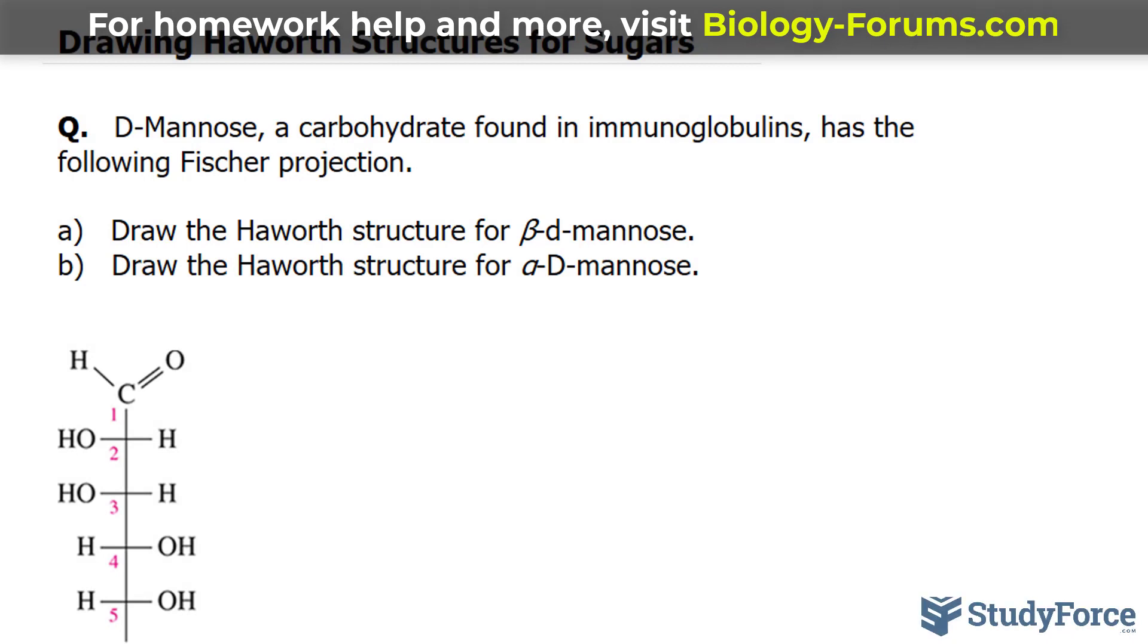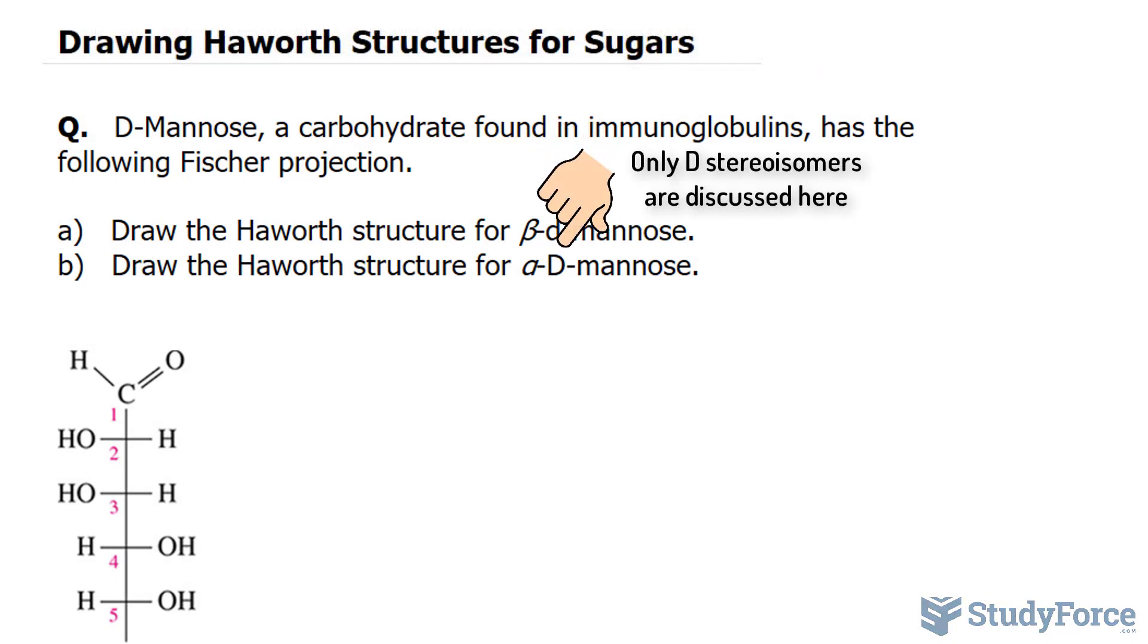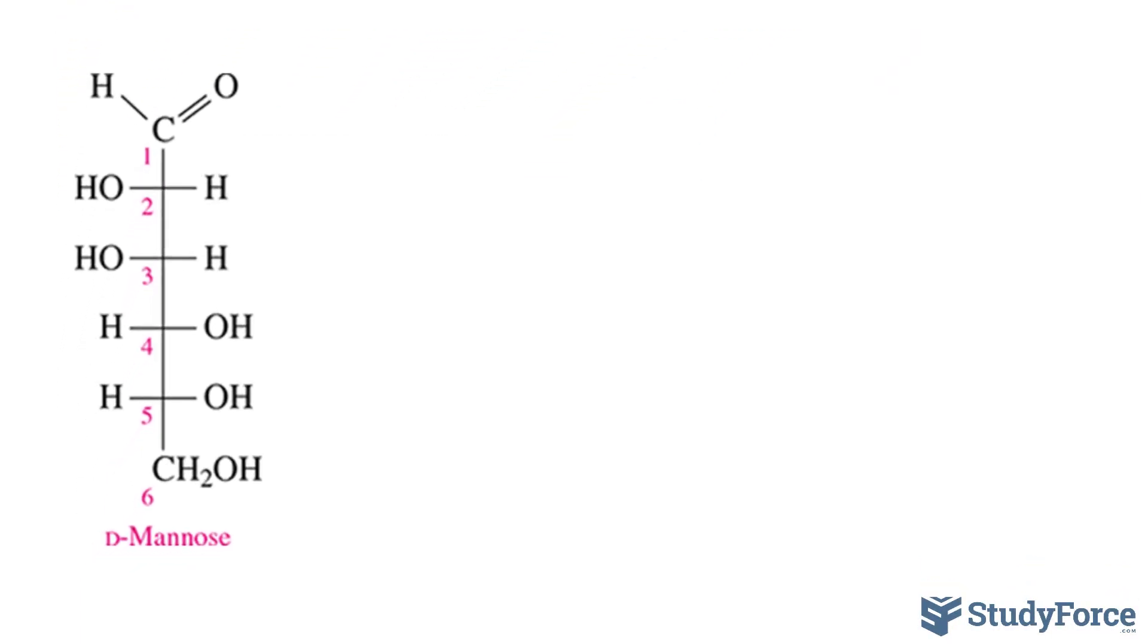Just to be clear, we've already learned what D and L signify when they're in front of a sugar name. They tell us the type of stereoisomer it is. But we haven't learned about alpha and beta. That is to be discussed after we draw the Haworth structure.